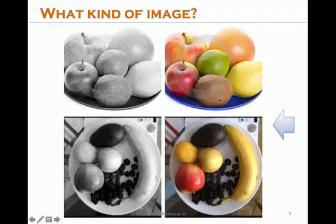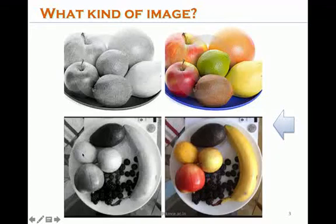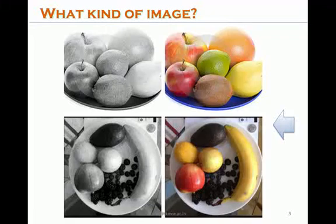We can utilize a fruit or a particular object for a certain application only if we are able to interpret what it is. If the information is not in our memory, we cannot utilize it. If it is there in our memory we can say that this is that fruit and it can be used for these purposes. Taking information for some other application is called interpretation. Only if we interpret something can we utilize the information. This is called interpretation of data.